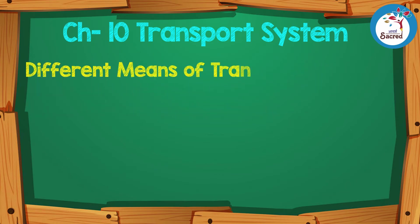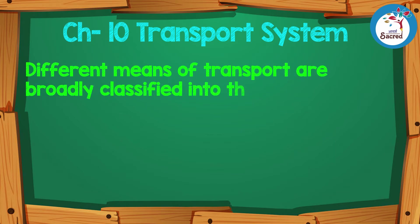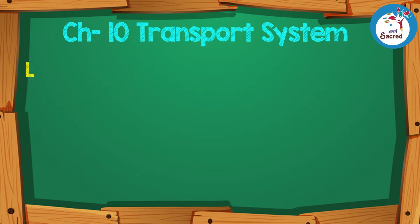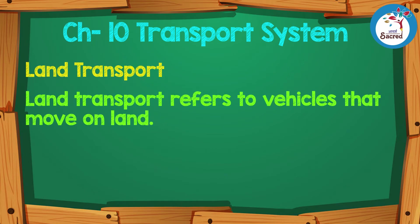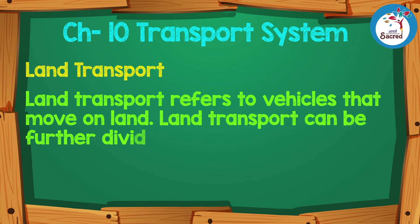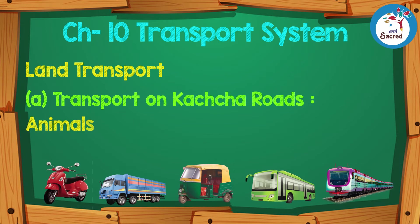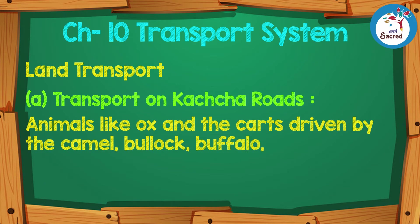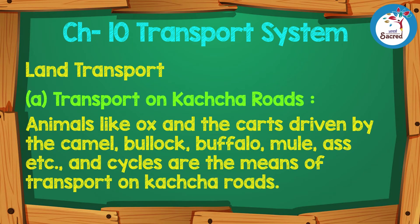Different means of transport are broadly classified into three main groups. Land transport refers to vehicles that move on land. Land transport can be further divided into three groups. A: Transport on kaccha roads — animals like ox and carts driven by the camel, bullock, buffalo, mule, ass, etc., and cycles are the means of transport on kaccha roads.